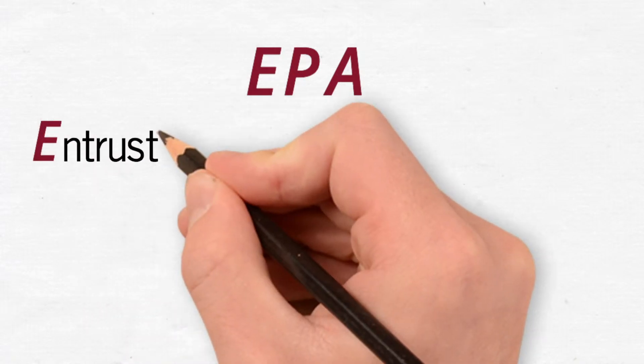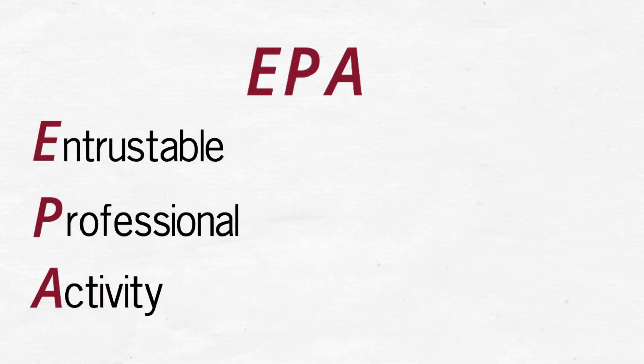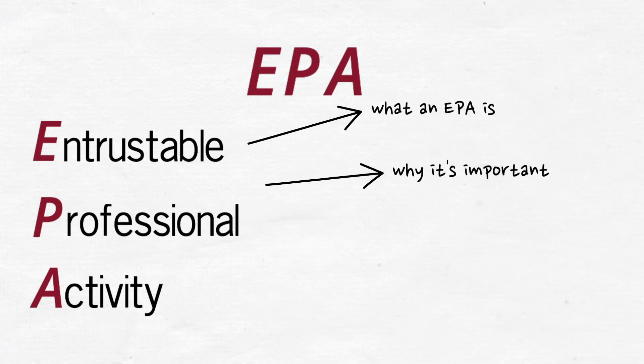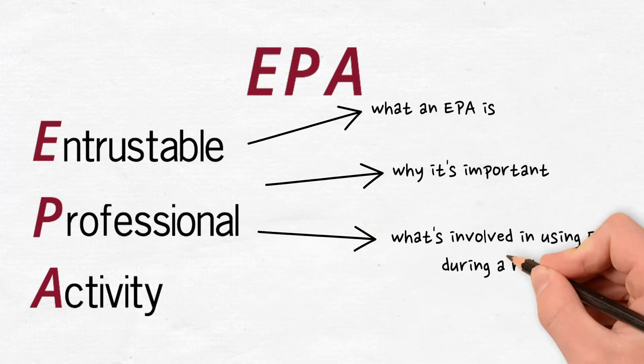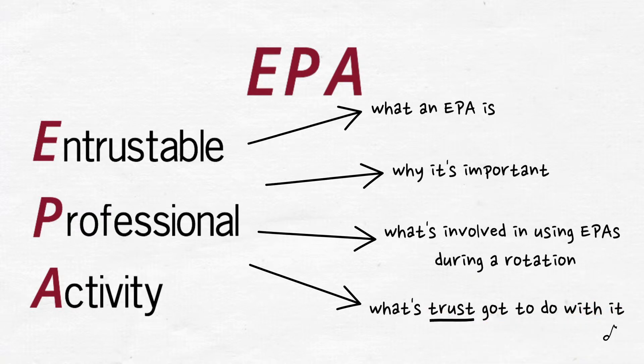This video was created to introduce you to a very interesting way of thinking about both learning and teaching. It's demonstrating something called an Entrustable Professional Activity, or EPA. We will cover what an EPA is, why it's important, what's involved in using EPAs during a rotation, and what trust has to do with it.